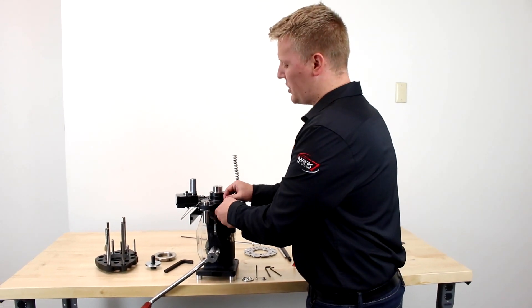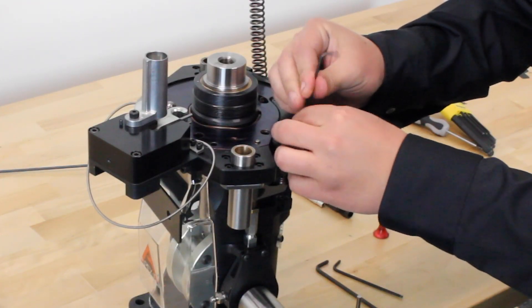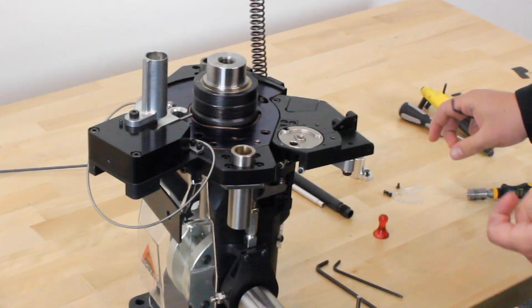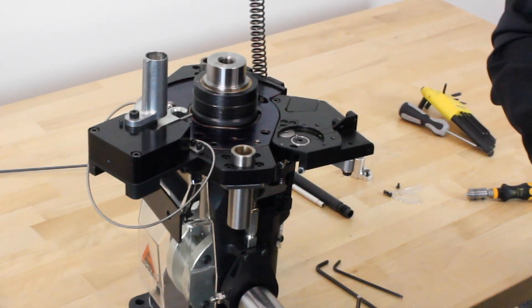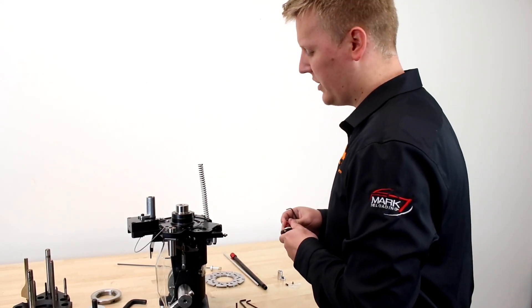So first thing we're going to want to do is remove our primer disc. Once again, I like to use a little magnet to simply lift the primer disc off. It's going to be a little difficult to get something down there. We do not recommend prying it up.